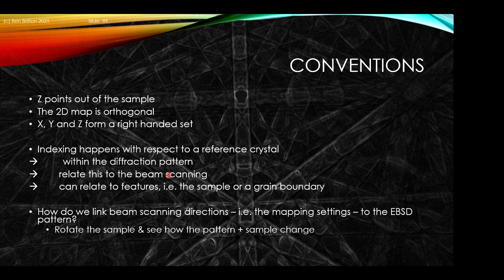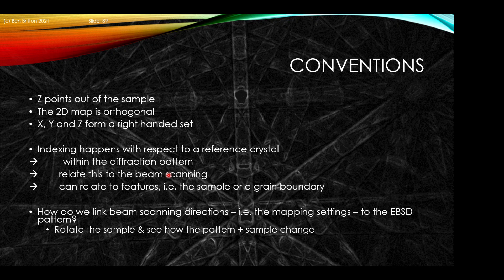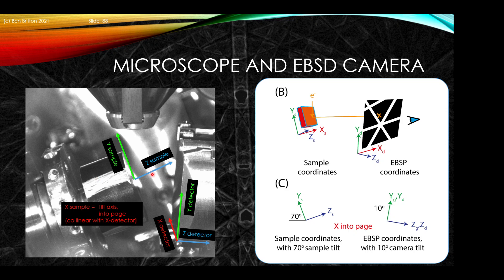The conventions we use: Z points out of the sample, the 2D map is orthogonal at right angles for X and Y, and X Y Z form a right-handed set. We describe that indexing happens with respect to a reference crystal in the diffraction pattern. We want to relate this to how the beam is scanned across the sample. A relatively simple case to do is to rotate the sample about the Z axis, doing an in-plane rotation of our crystal, which should result in a rotation across our diffraction pattern.